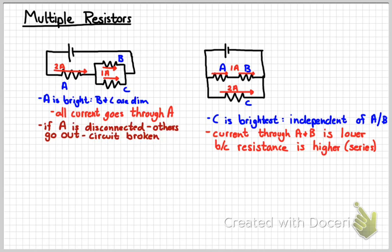You should also be able to tell me what happens if you were to disconnect one of those. For instance, if I disconnect light bulb C, what happens to the other two? Well, since light bulb C is in parallel with the other two, they're not going to be affected at all. They have independent currents.